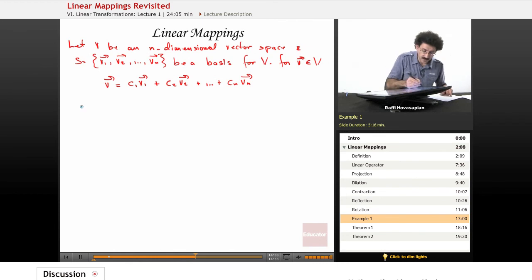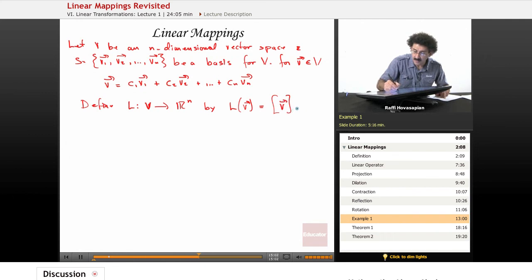So now let us define our linear map, which takes V and maps it to the space R^n. So some n-dimensional vector space V, it's going to map to our n-dimensional Euclidean space R^n, defined by L of V - whatever the vector is, I end up with a coordinate vector.